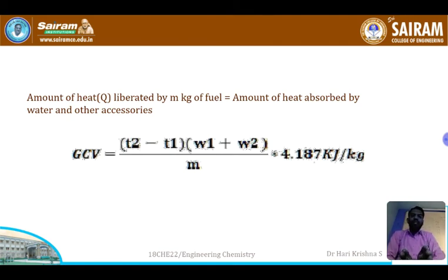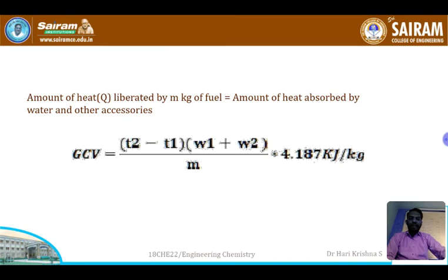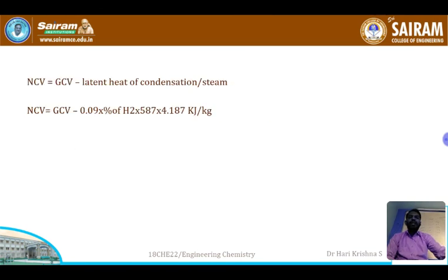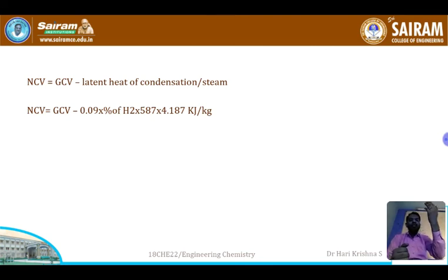GCV includes the latent heat of steam — that is, the heat liberated by condensing water vapor into liquid water. If we want only the heat energy stored in the fuel itself, that is the net calorific value, NCV. So NCV = GCV minus the latent heat of condensation. GCV equals the heat liberated by the fuel plus the heat obtained by condensing the water vapor. Subtracting the latent heat of steam from GCV gives us NCV.